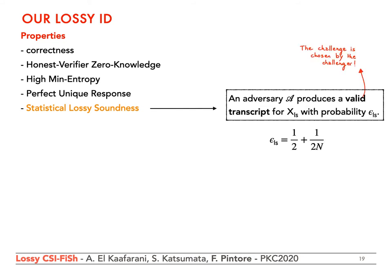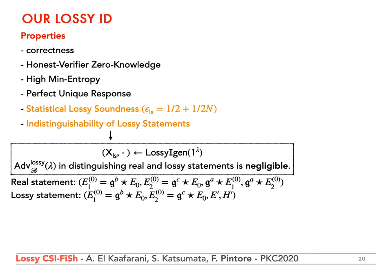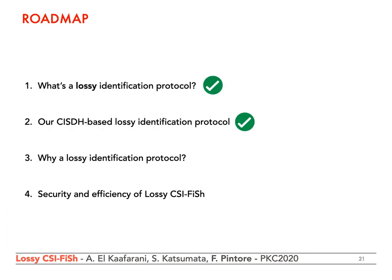More precisely, the advantage epsilon_ls of an adversary A in the lossy impersonation game is equal to 1/2 + 1/(2N). Before addressing statistical lossy soundness further, it's important to observe that the protocol has indistinguishability of lossy statements. Indeed, a real statement is composed of E01 and E02 — uniformly random by construction — and then G^a * E01 and G^a * E02. A lossy statement is just a tuple of four uniformly random elliptic curves. These two tuples coincide with those of the two distributions in the DC-side problem, which we assumed to be hard.